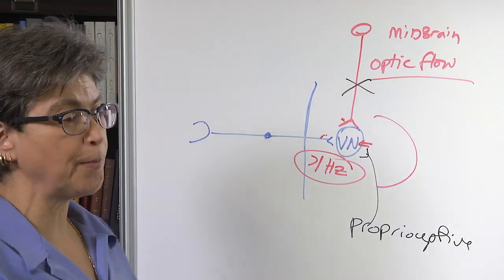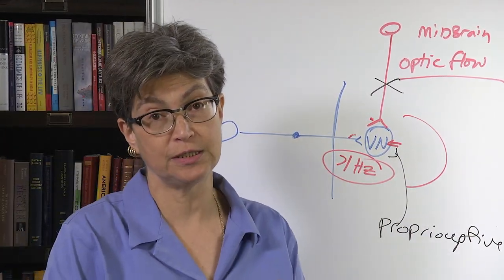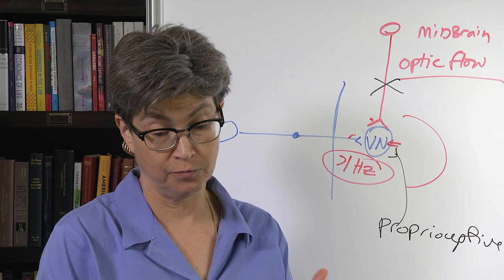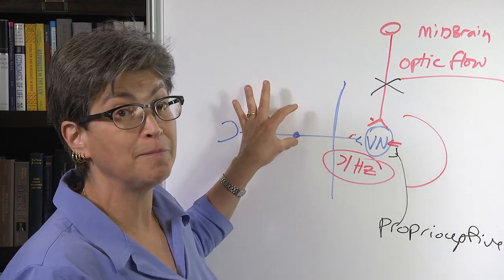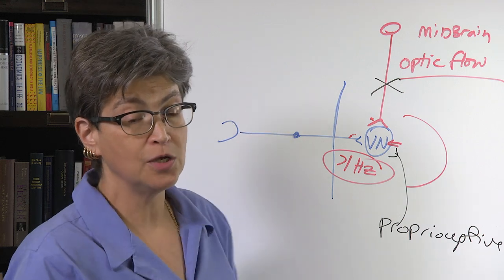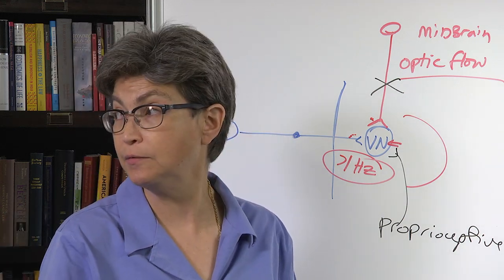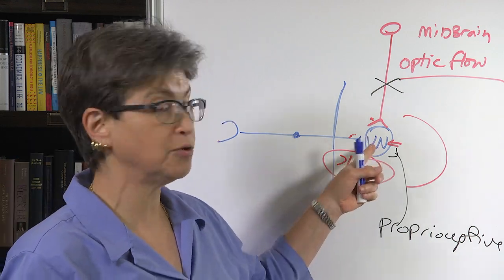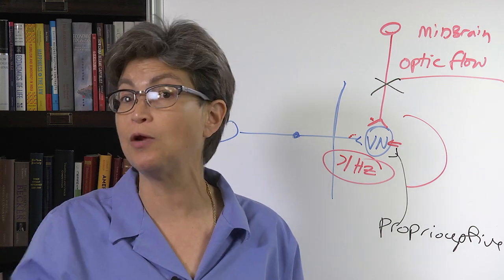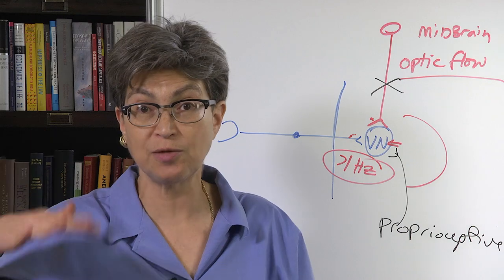And so consequently, when we do propel ourselves, we send a message to the vestibular nucleus to tell the vestibular nucleus to ignore expected movements of the head. So for example, if I decide I'm going to turn my head to the right, as I turn my head to the right, I'm also sending a signal to the vestibular nucleus to ignore that rightward yaw rotation. So that's suppressed.